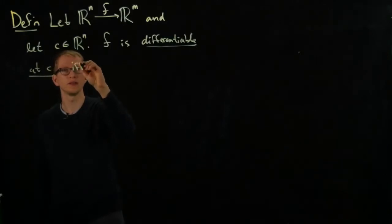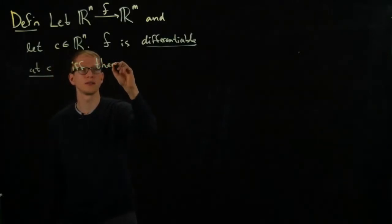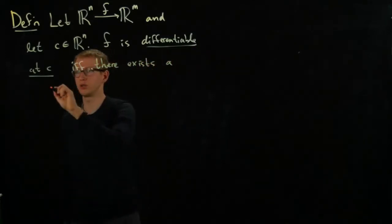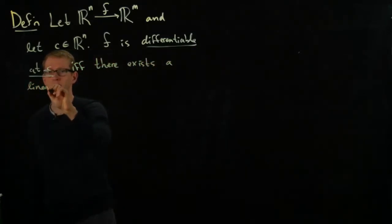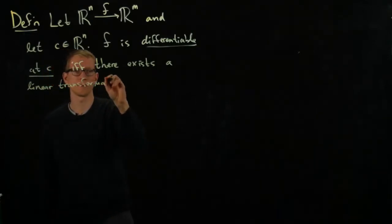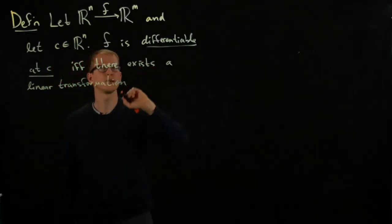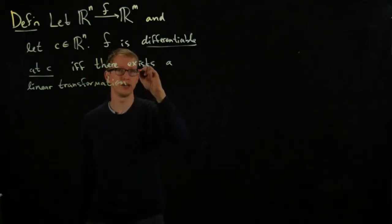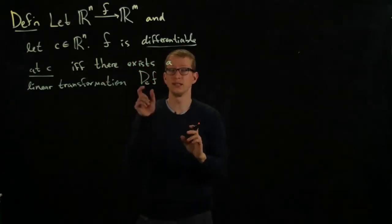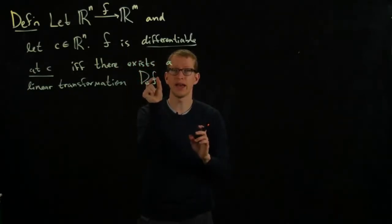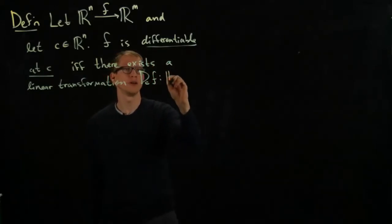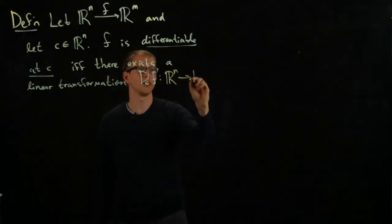Let's denote it by DCF. We'll think of this transformation as the differential of F at the point C, from R^n to R^m.